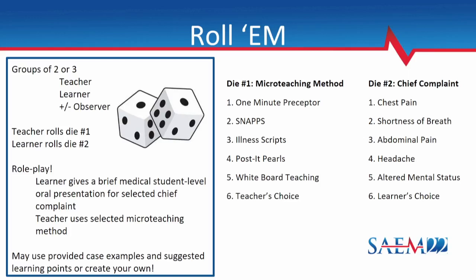So ideally, we want you to break into groups of two, but a group of three is fine as well. One person is going to play the role of the teacher, and one person is going to play the role of the learner. If you have a third person, they can serve as an observer and provide feedback on your teaching, and then you can rotate through roles. The learner and the teacher are each both going to roll a die. We have dice here for you, and the number that you roll corresponds to one of these micro-teaching methods that we just talked about for the teacher, and then for the learner, one of these chief complaints. On your handouts, we have some suggested case presentations as well as suggested learning points for each case.